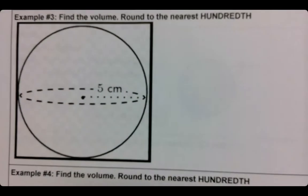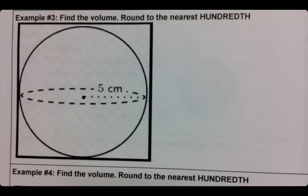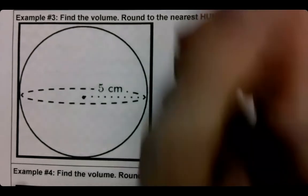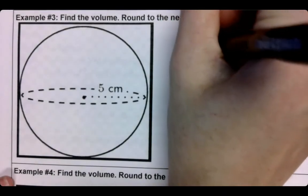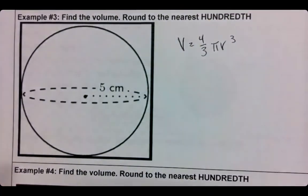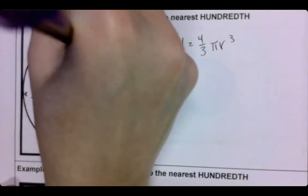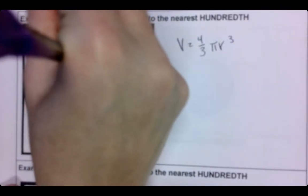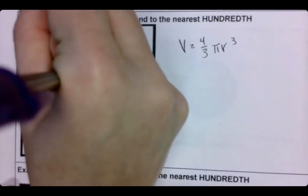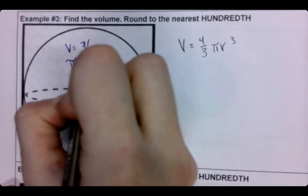Try number 3. Try and do it, and then come back, and let's see if we got the same answer. Welcome back. 4/3 π r³. We have volume unknown. π is 3.14. Radius is 5.